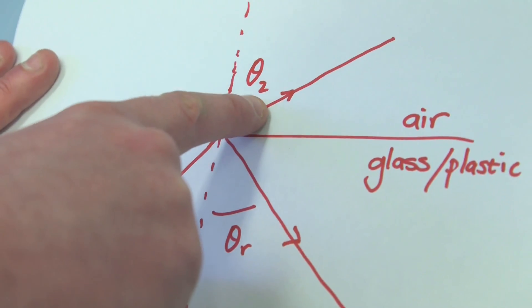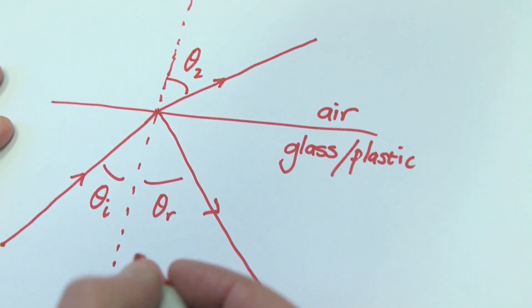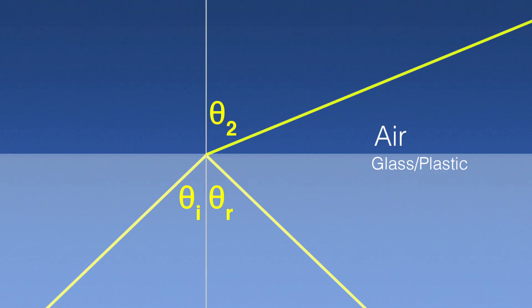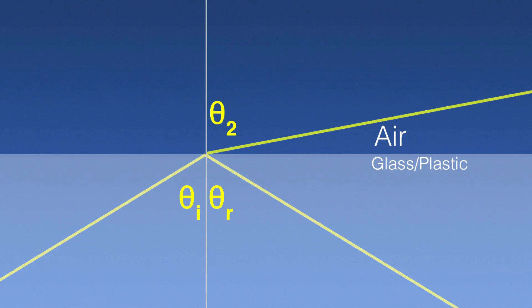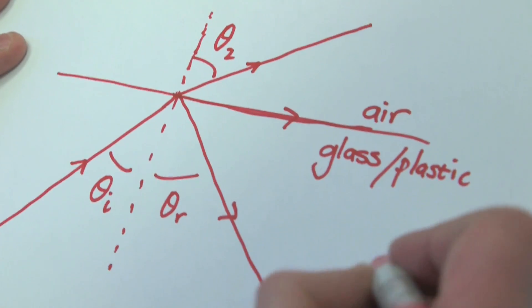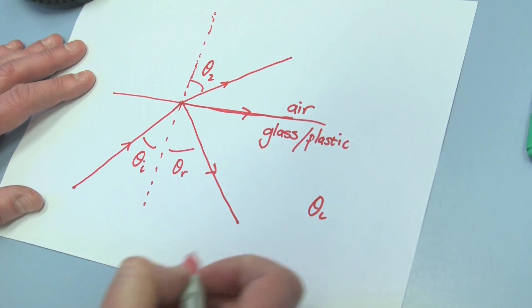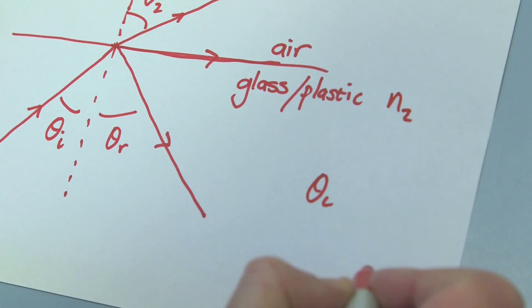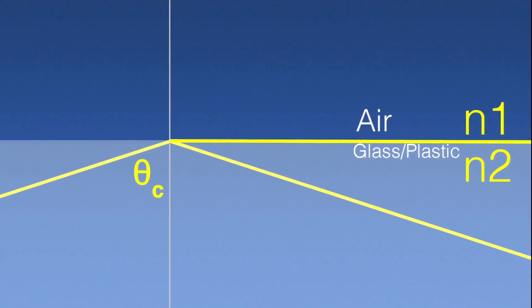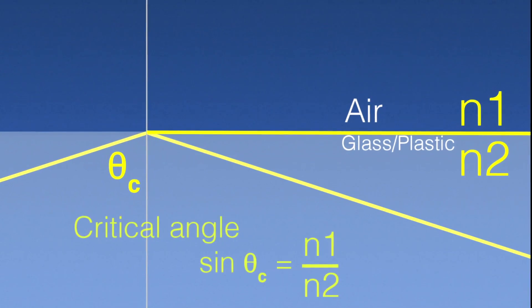If we extend this idea and make the angle of incidence bigger, theta_2 continues to increase until eventually the refracted ray moves parallel to the surface. There is a critical angle at which this refracted ray runs across the interface. Beyond that critical angle, the light is totally internally reflected — all the light is reflected back inside the glass block. This critical angle theta_c is fairly easy to calculate if we know the two refractive indices.